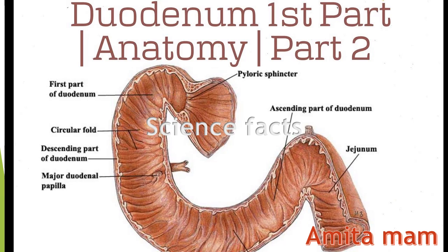We will now look at the anatomy of the first part of the duodenum. On your screen you can see the first part of the duodenum, showing the circular fold, the descending part of the duodenum, and the major duodenal papilla.